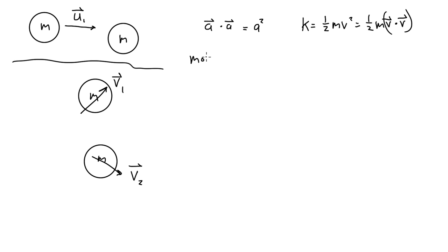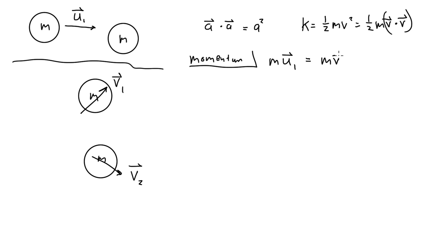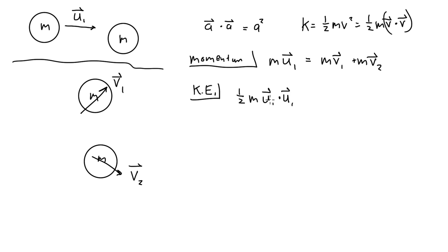The momentum conservation equation for this collision: the initial momentum is m times u1 — that's the momentum of the cue ball; the target has no momentum — and that equals m·v1 plus m·v2.